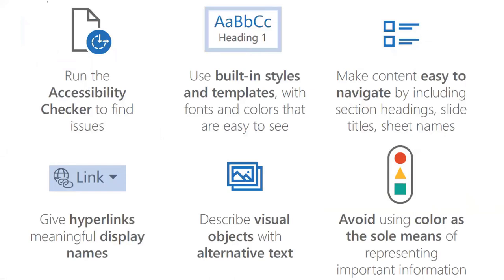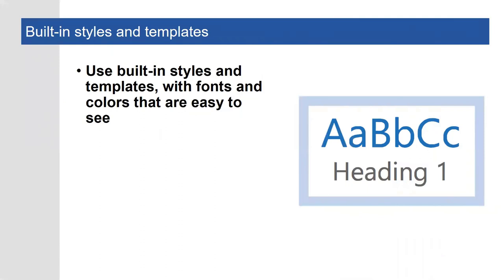Most of the issues that present barriers to access, including those identified by the Accessibility Checker, can be prevented or fixed by following just a few simple practices. You can enhance the accessibility of your Office content by using built-in styles and templates with fonts and colors that are easy to see. Microsoft offers a collection of templates that help you make your content accessible to everyone. These templates have better color contrast, larger font size, headings in a logical format, and more. You can find the accessible templates by going to office.com and searching for 'accessible templates,' or you can get to them from within your Office application.